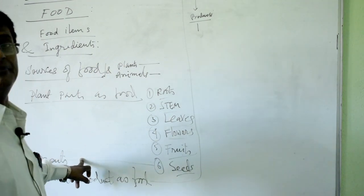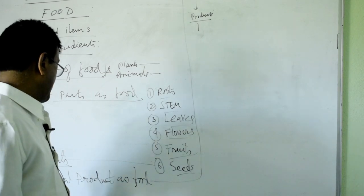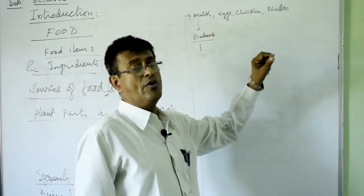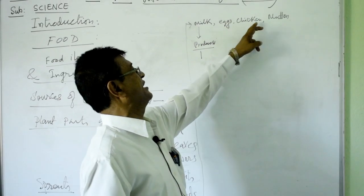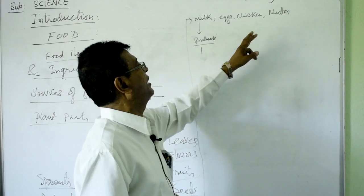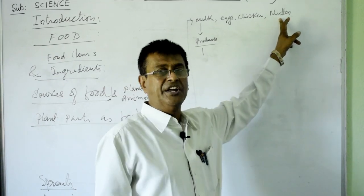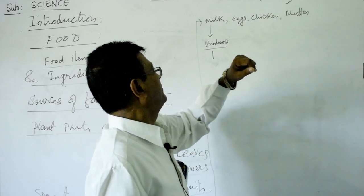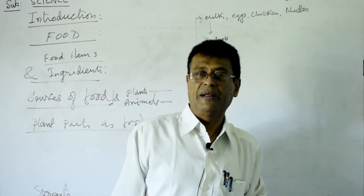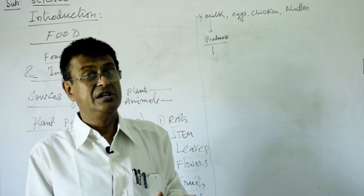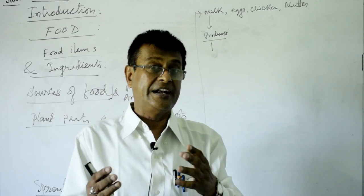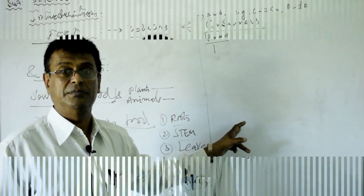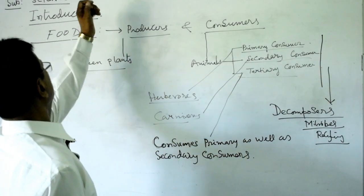Sprouting is very good for health. Animals also produce food products — milk, eggs. We get bird meat such as chicken or duck. We also have meat from various animals like the he-goat and others. These are the animal products. So we have plant products and animal products.